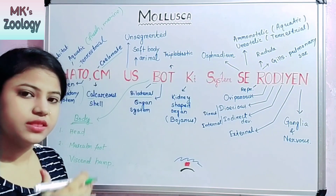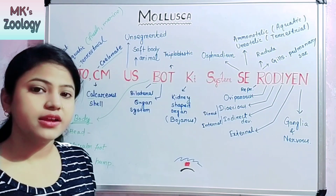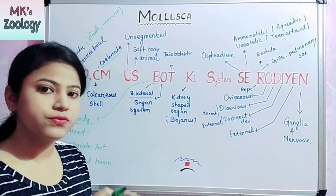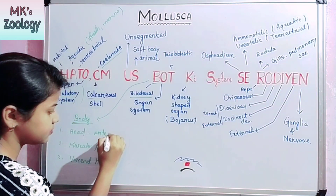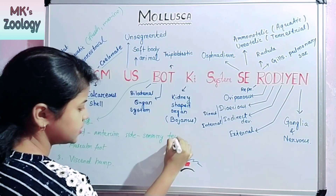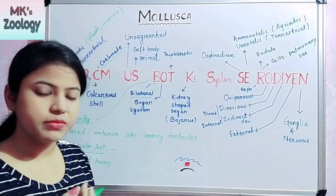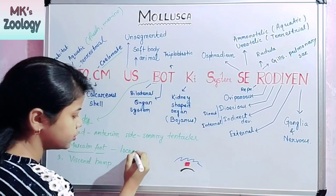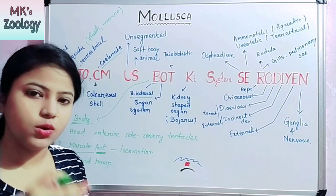The head is present on the anterior side. On the anterior side of the head, sensory tentacles are present. The sensory tentacles help the animal sense all the food present in the environment. The muscular foot is present on the lower side of the animal and helps in locomotion.